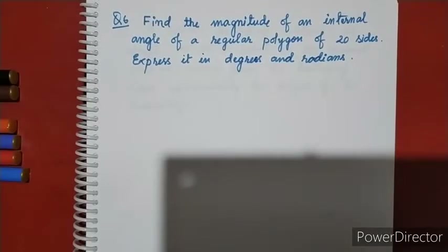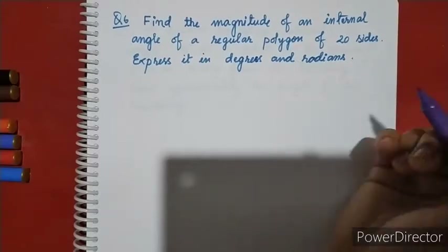Find the magnitude of an internal angle of a regular polygon of 20 sides, expressed in degrees and radians. This is about regular polygons.